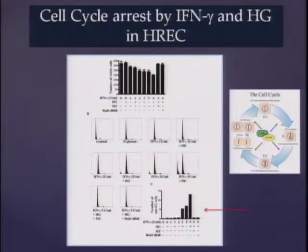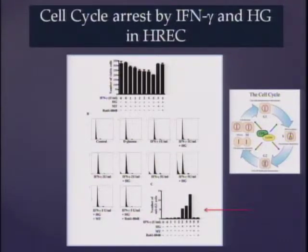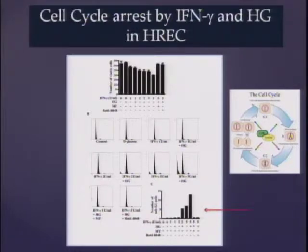He also did cell cycle analysis by flow cytometry, showing that interferon gamma treatment of HREC causes cells to arrest at sub-G1 — they are not going through the cell cycle. As interferon gamma concentration increases, more cells accumulate in sub-G1. Two inhibitors — MT, an IDO inhibitor, and R061, an inhibitor for kynurenine-3-hydroxylase — both prevent this cell cycle arrest, clearly implicating IDO in this process.